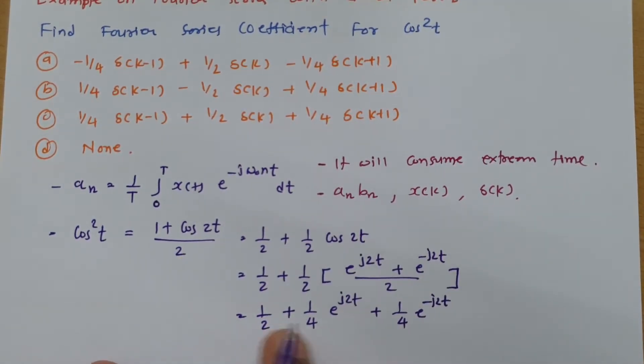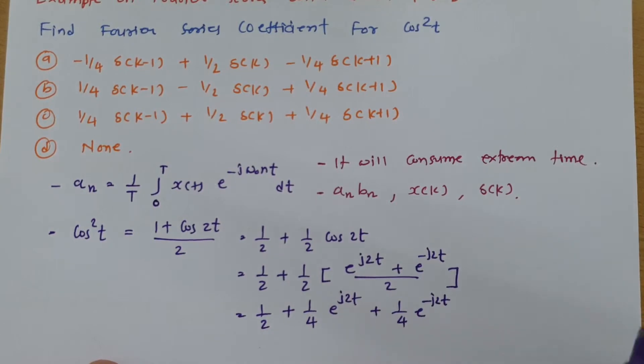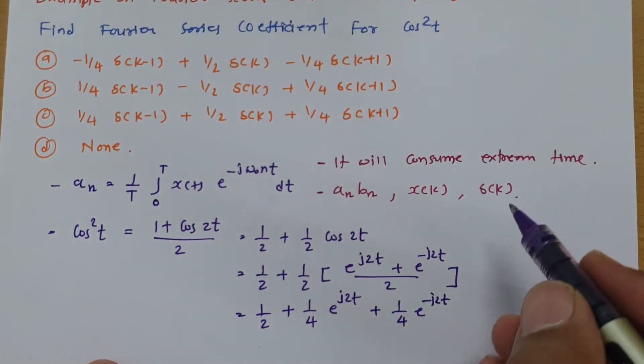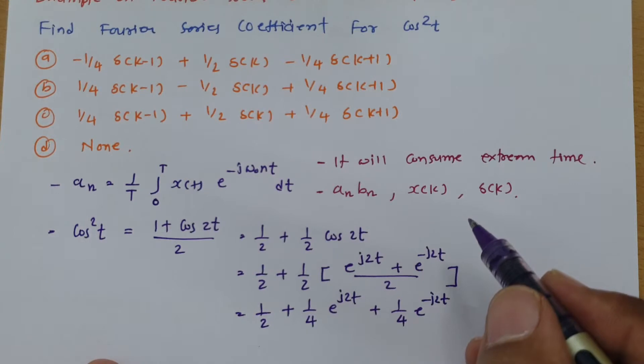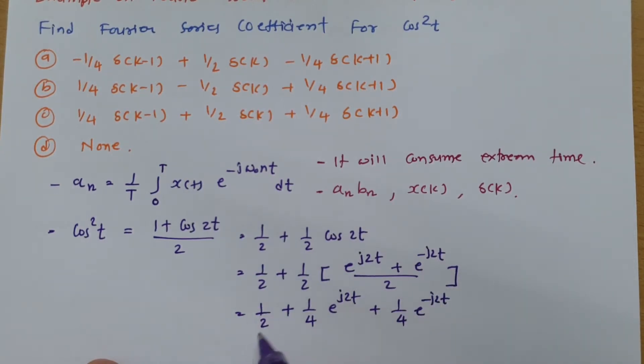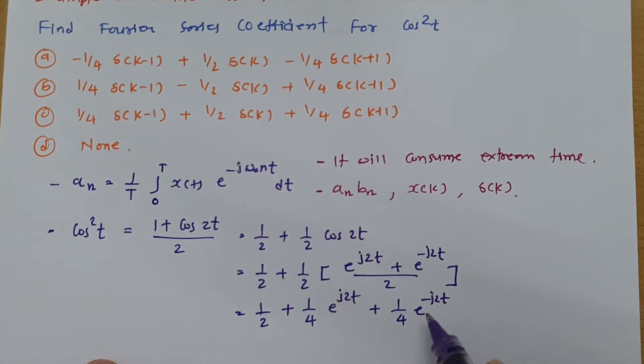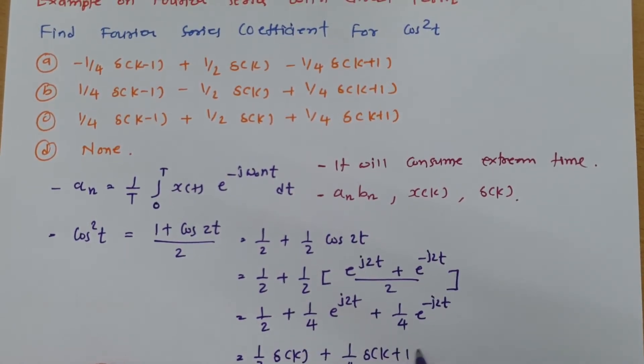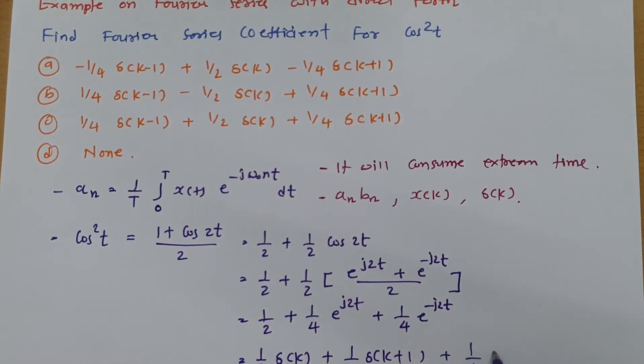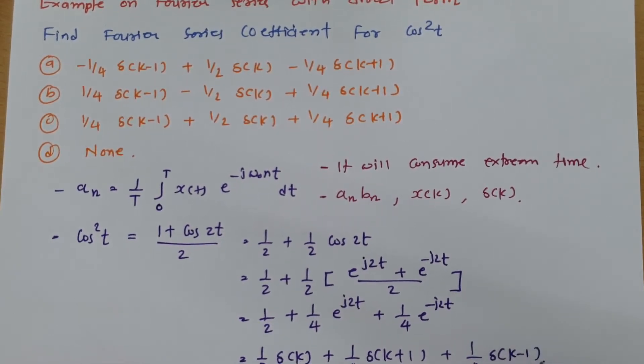Now we can see this is what in exponential term and we can represent that in terms of delta of k. So all we can say is this is having delta of k. This is having one shifted version in advance and this is having one delayed version. Right. So we can say this is what? 1 by 2 into delta of k plus 1 by 4 into delta of k plus 1 plus 1 by 4 into delta of k minus 1.